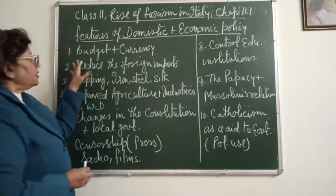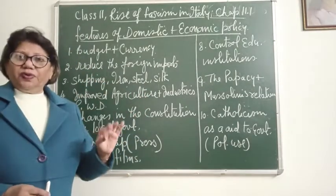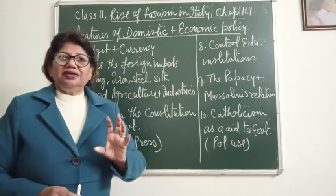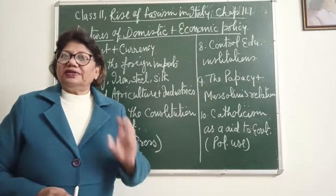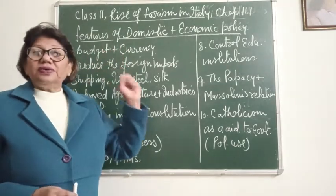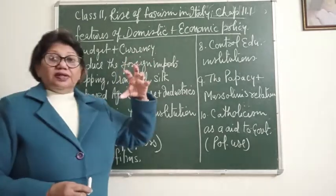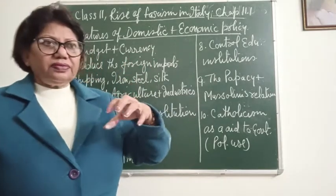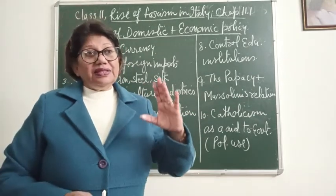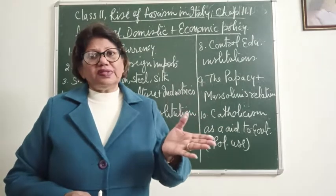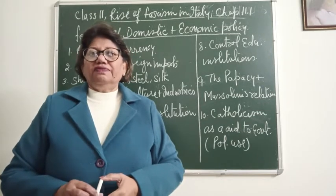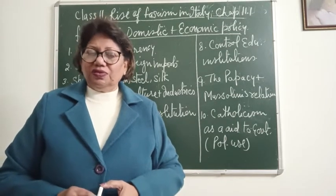The first main point — the whole problem that started in Italy was the financial problem. So first of all, Mussolini controlled the budget and currency. A balance was made between the budget expenses and the value of currency. This was the main thing which was started by Mussolini.